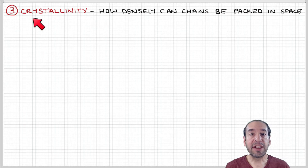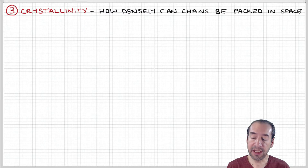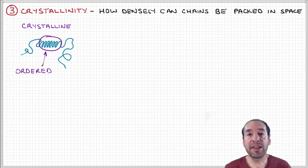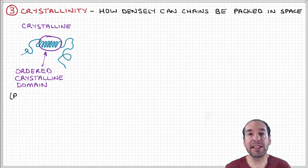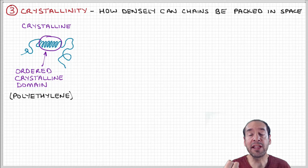Another aspect of the molecular structure that we can talk about is crystallinity. This deals with how densely the polymer chains can be packed into space. We talked about this already a little bit in the context of polyethylene, where high-density polyethylene has an architecture where this flexible chain can densely pack to the point where it can form a semi-crystalline arrangement.